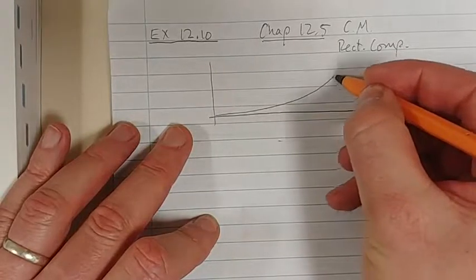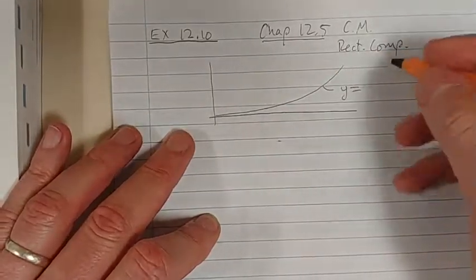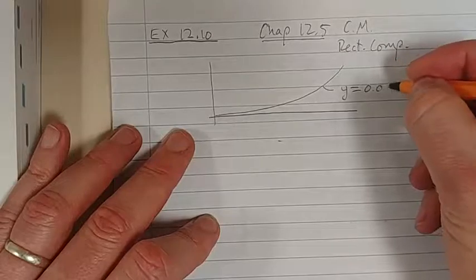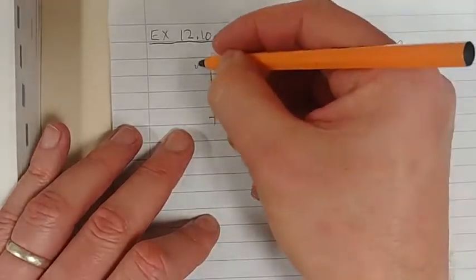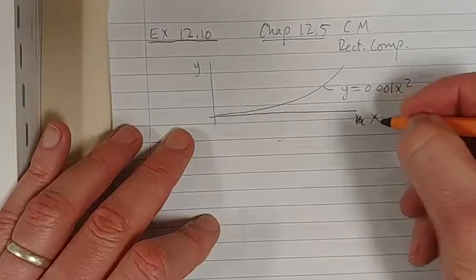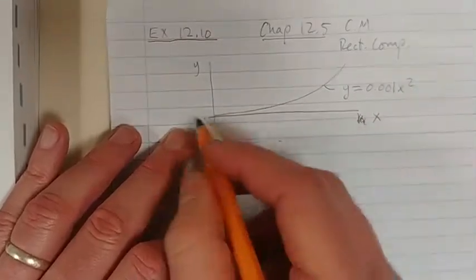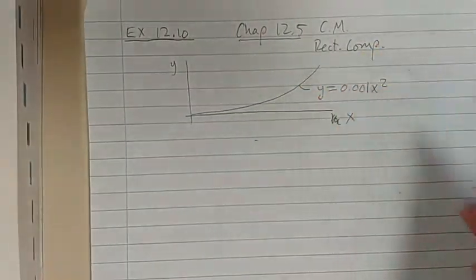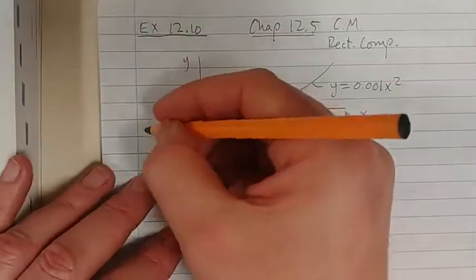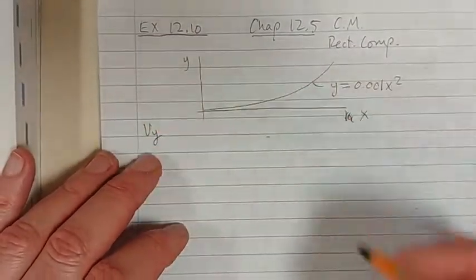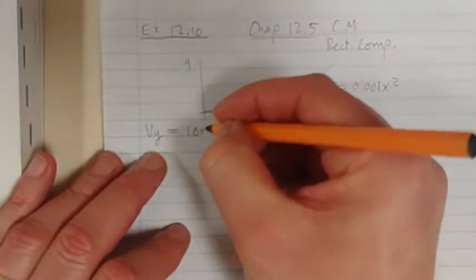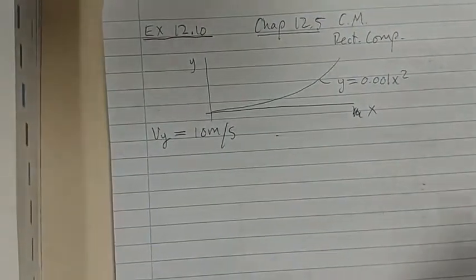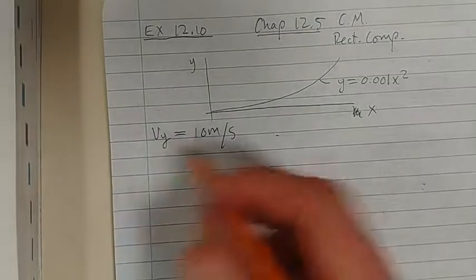So what does the problem look like? An aeroplane is flying a trajectory given by y equals 0.001x squared. There's the height, there's x, there's the ground — my x direction, my vertical direction. An aeroplane is flying this kind of path, and it says the velocity in the y direction is a constant 10 meters per second.